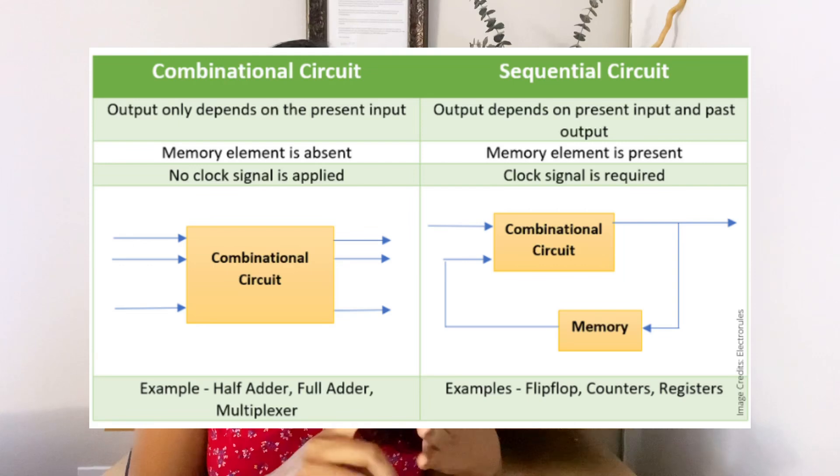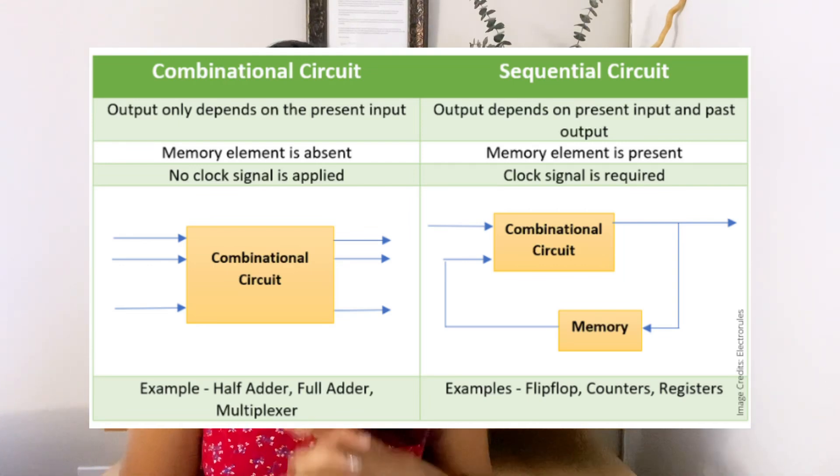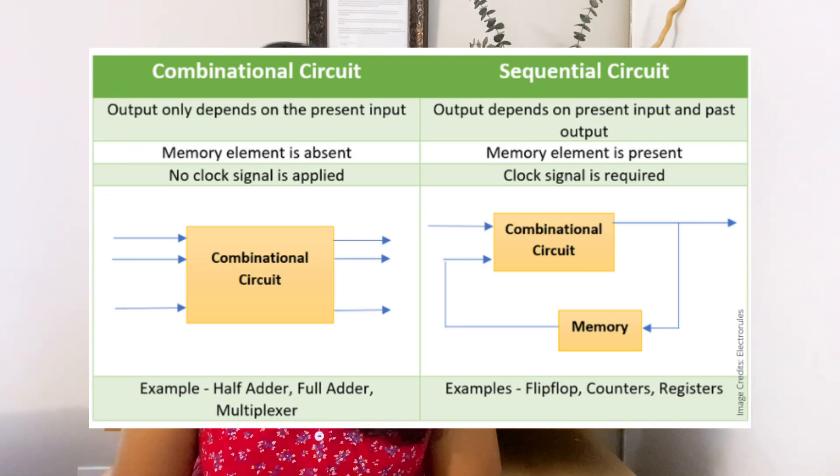Previous output or input also affects the working of the sequential circuit. The examples of combinational circuits are MUX, DMUX, encoder, decoder, adder, and subtractor, whereas shift registers and counters are sequential circuits. So this is the difference between combinational circuit and sequential circuit.